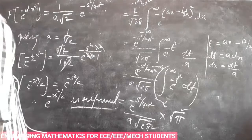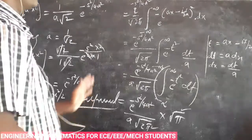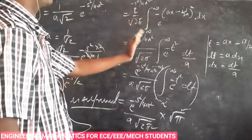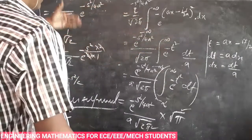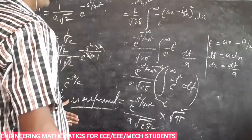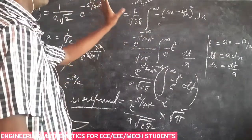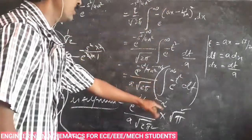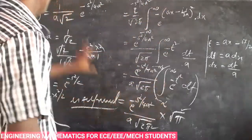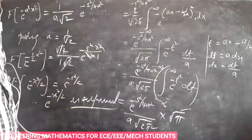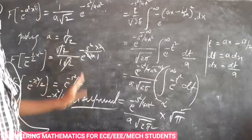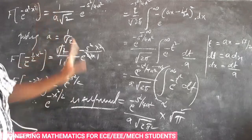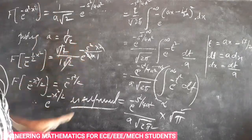In this problem, the formula we used is: integral from minus infinity to plus infinity of e power minus t squared equals root pi. By completing the square and substitution, we converted the integral into that formula. This is a very easy problem. At the end of university exams, there will be a question on this topic in TPD.